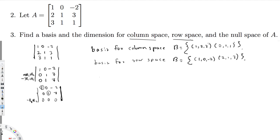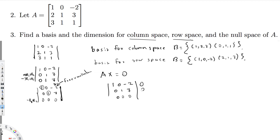For the null space, we solve the equation Ax = 0. We don't need to redo Gauss-Jordan since we already have the RREF. We directly substitute zeros on the right-hand side. The RREF matrix is: 1, 0, -2 / 0, 1, 7 / 0, 0, 0, equal to the zero vector. The third variable z is the free variable since column 3 has no pivot.